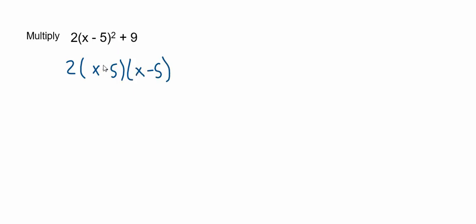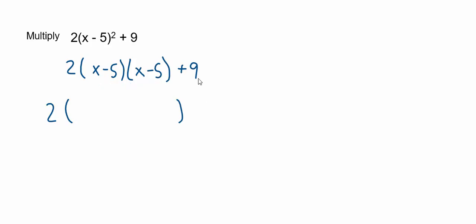Since there's a 2 here, I make two factors of the x minus 5. Don't forget to copy the plus 9. Like in the last problem, I'm going to copy the 2 and leave a lot of room to multiply out these two binomials. When I'm done, I'll combine like terms like before, and then multiply everything by 2. And again, don't forget to add 9 on the outside here.